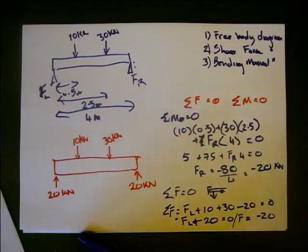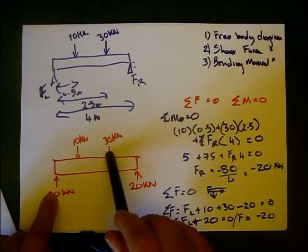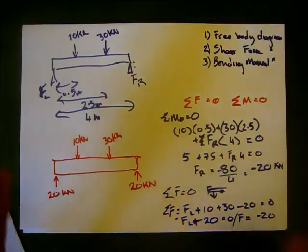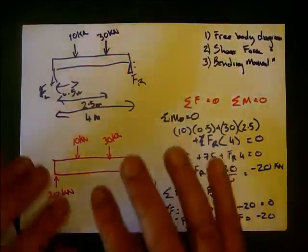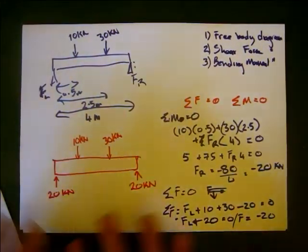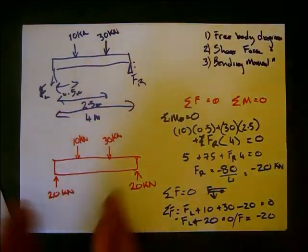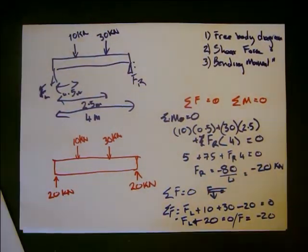And what we can do now is just check this. Do the forces up equal the forces down? We've got 40 going up, we've got 30 plus 10, 40 going down. That's going to be our free body diagram. Our free body diagram is basically our beam floating in space, and then we determine all the forces on it. If it is in equilibrium, the up forces must equal the down forces, the left forces must equal the right forces.